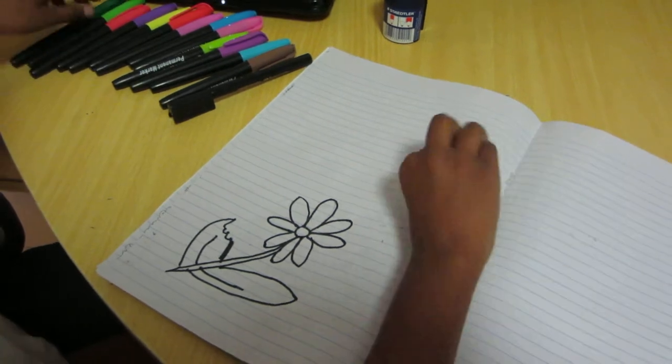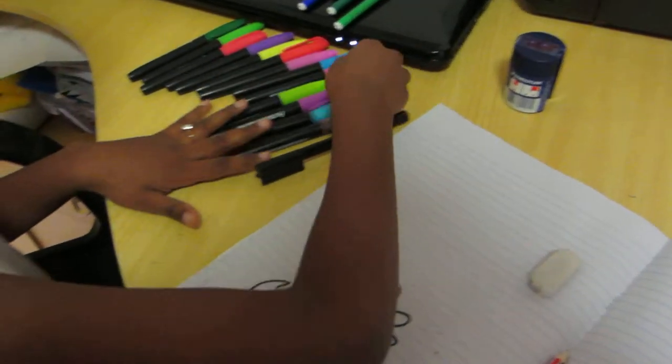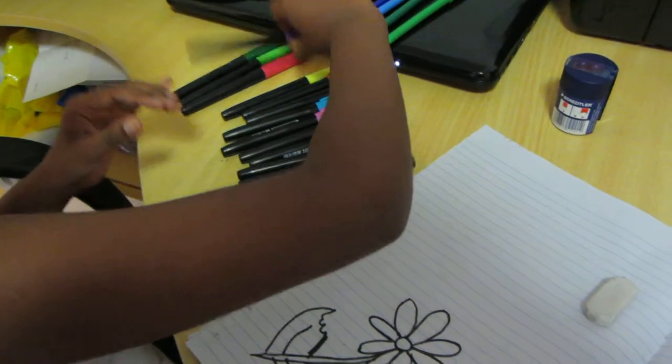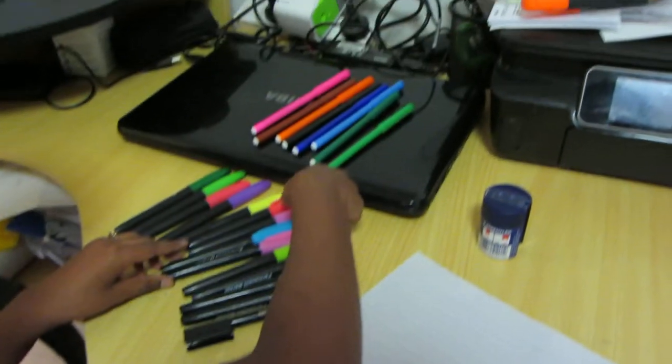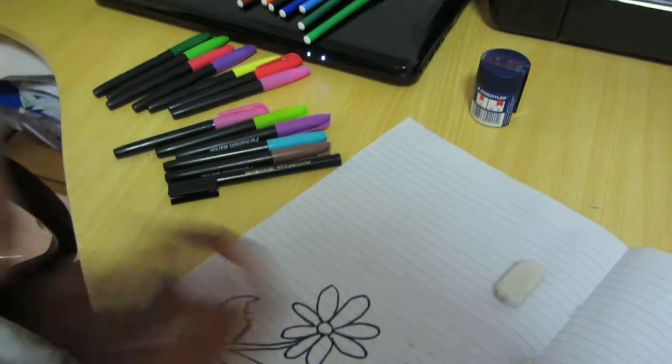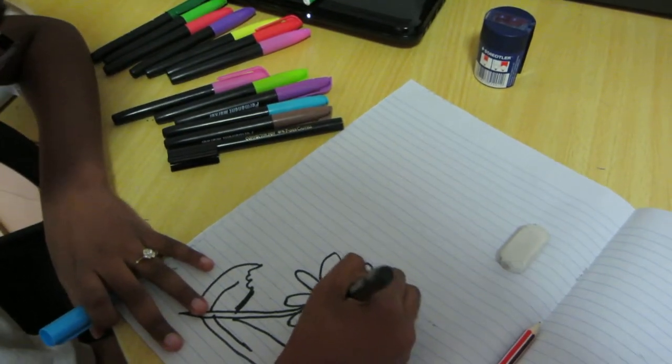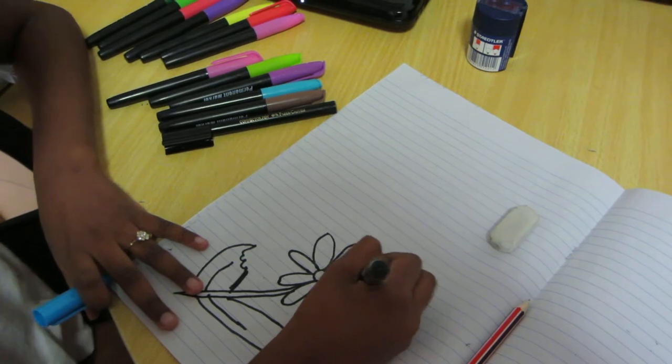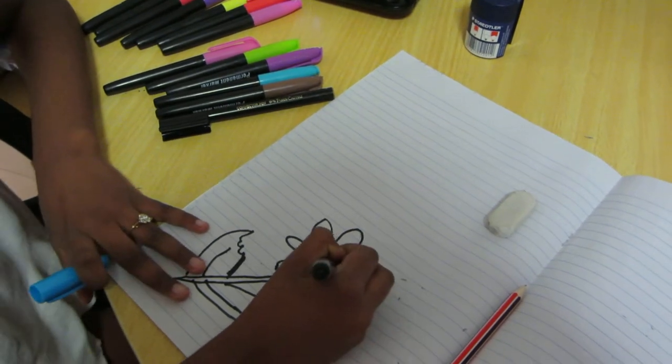There we go. Now it's time to color in our daisy. My favorite color is purple, but there's no purple daisies, so I'll go with blue and color it in. And if you feel like it, you can do shadows.